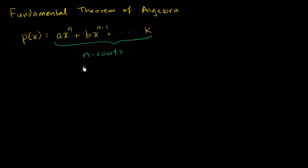So let's say I have the function p of x, and it's defined by an nth degree polynomial. So let's say it's ax to the n plus bx to the n minus one, and you just go all the way to some constant term at the end. There are going to be exactly n values for x which will make this expression equal to zero.